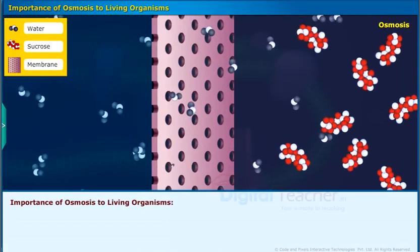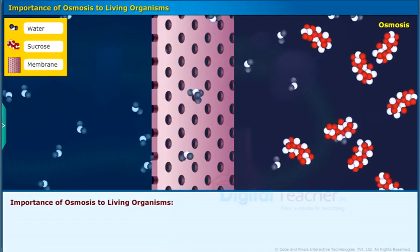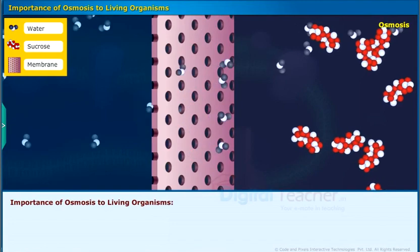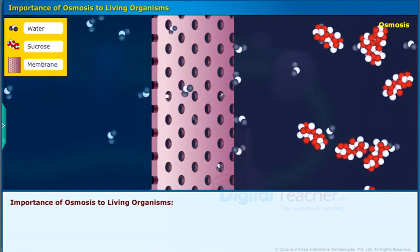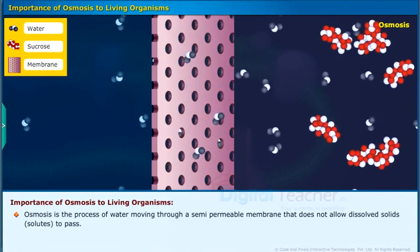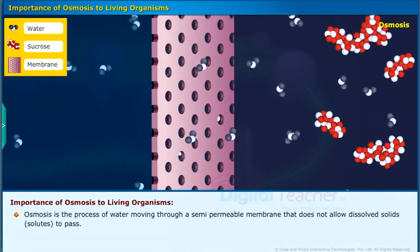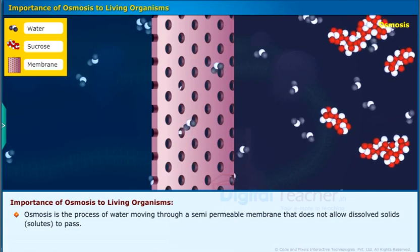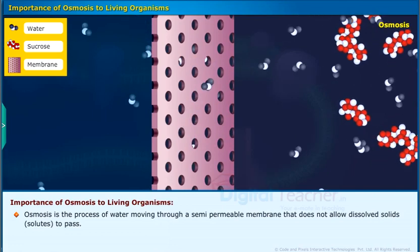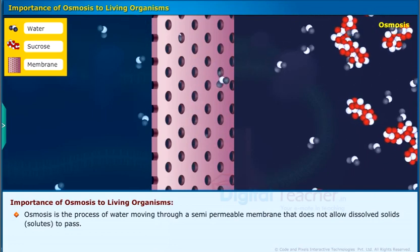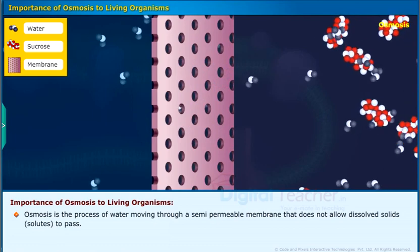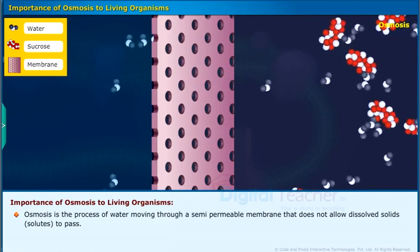Now, let us discuss about the importance of osmosis to living organisms. Osmosis is the process of water moving through a semi-permeable membrane that does not allow dissolved solids or solutes to pass.